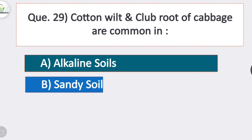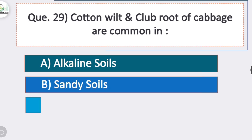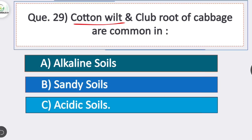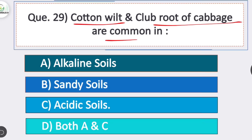Question 29: cotton wilt and club rot of cabbage are common in? Option C is correct — acidic soil. Cotton wilt and club rot of cabbage are both common in acidic soil.